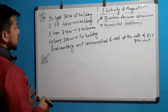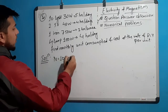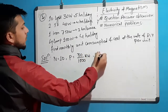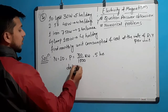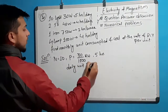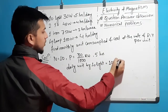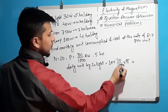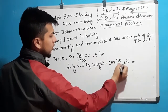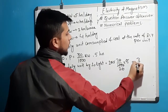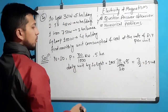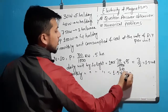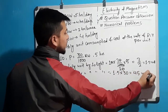For 10 lights of 30 watt for 5 hours: daily unit consumption by 10 lights equals 10 into 30 upon 1000 into 5, which equals 1.5 units per day. Monthly unit by 10 lights equals 1.5 into 30 equals 45 units per month.